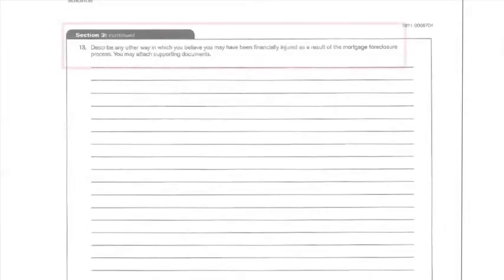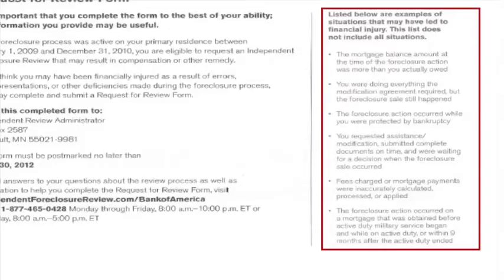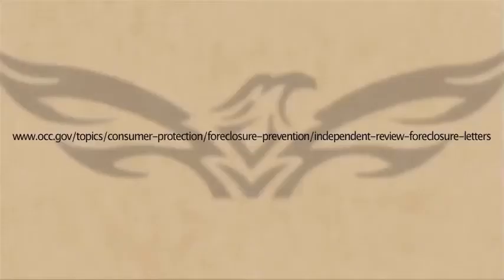Section 3, Background, is possibly the most important section of the application. This is where you identify the financial harm you've experienced. Although this application only lists six examples on page one of five, there are 22 listed in the engagement letters from the OCC. You can view them at the OCC website listed here.